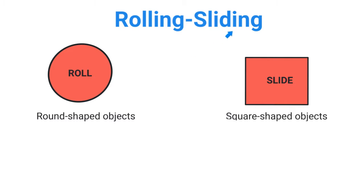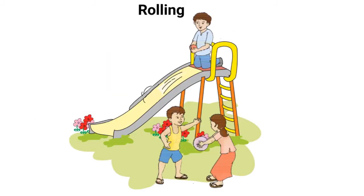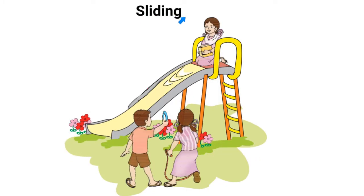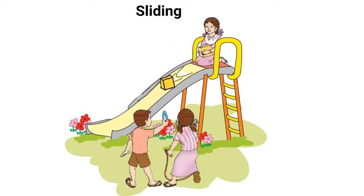Now that you've understood the difference between rolling and sliding, let's begin. This boy is at the top of a slide — he is going to roll a ball down. A ball is a round shaped object so it will roll down the slide. This girl at the top of the slide is trying to slide a square shaped object down. A round shaped object would have rolled, but since this is a square shaped object, it will slide.